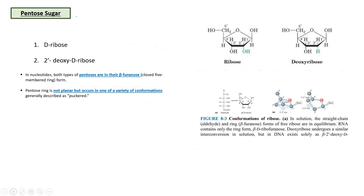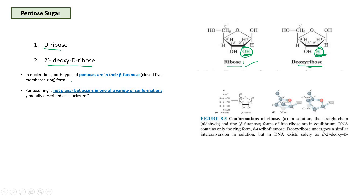Regarding pentose sugars, there are two types: D-ribose and 2-prime-deoxy-D-ribose. Both are pentose sugars, but they differ at the 2-prime carbon: ribose has an OH group at the 2-prime carbon, while deoxyribose has only hydrogen. This is a very important difference. Because of this OH group, RNA is more reactive; because DNA has only hydrogen at 2-prime, DNA is more stable.